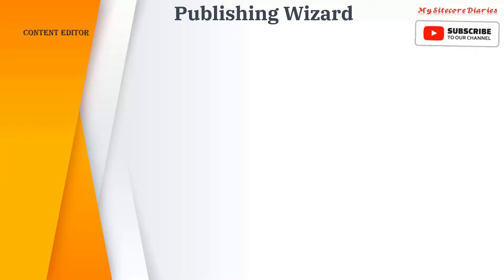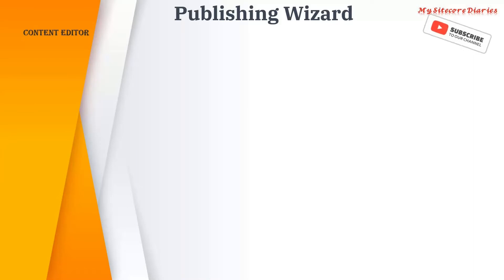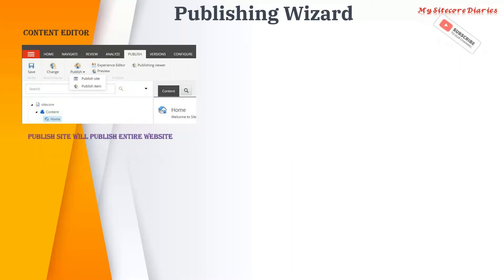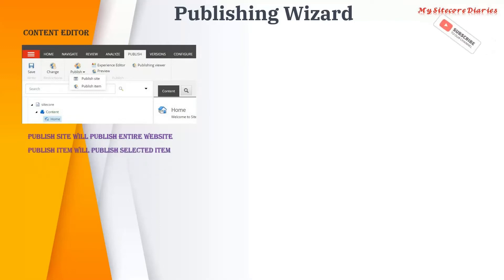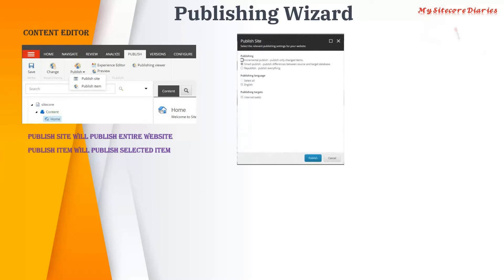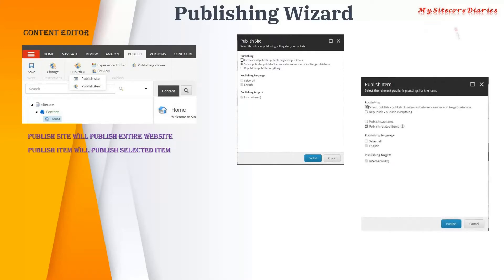In Sitecore we have two interfaces where editors or authors can publish content. The first is the content editor — on the menu you have two options under publish: 'Publish Site', which publishes the entire website, and 'Publish Item', which publishes the selected item.